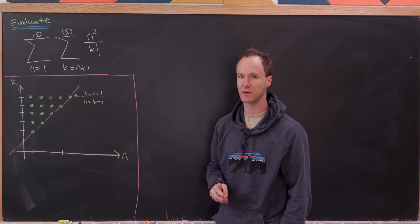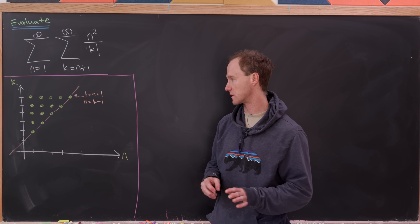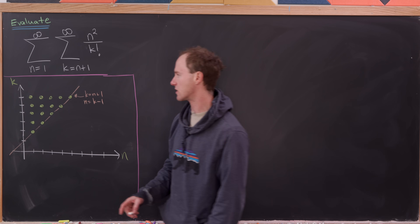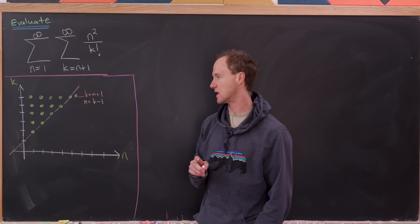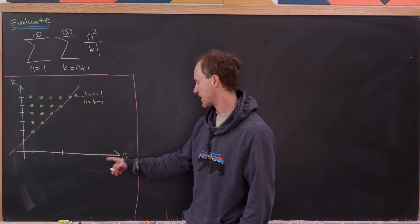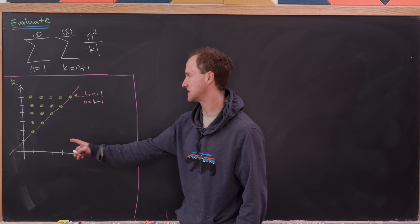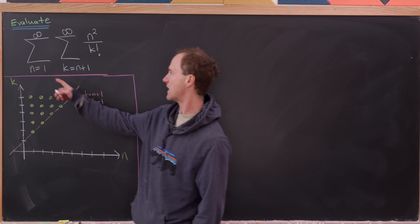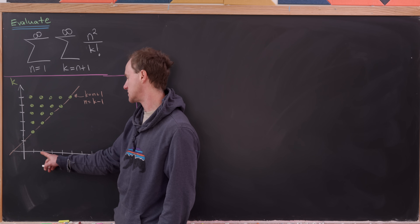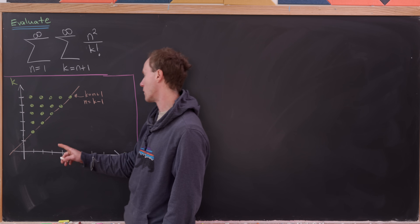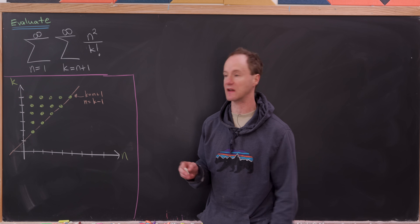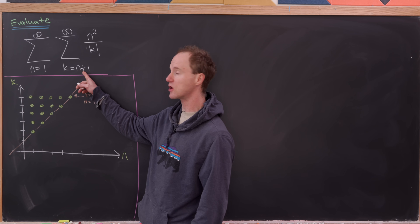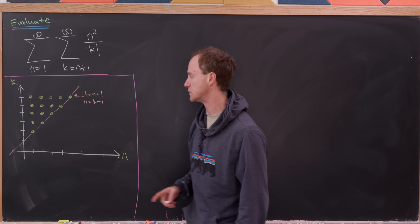The first method we're going to use is to switch the order of summation. I've drawn a picture of the lattice points that we're summing over. Here I've got the n-axis and the vertical axis is the k-axis. The values of n we take are 1, 2, 3, 4, and so on infinitely. But then k starts at n plus 1 and goes to infinity.